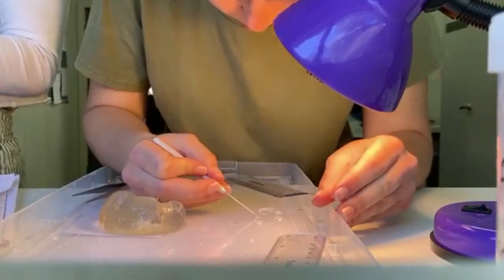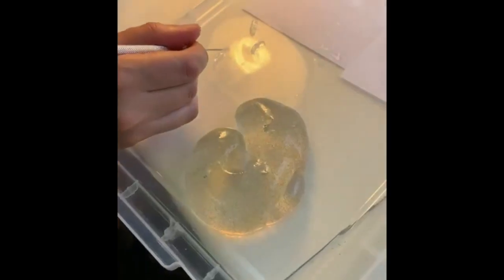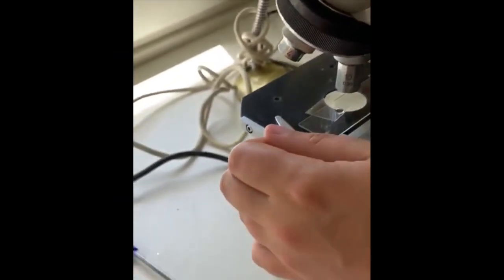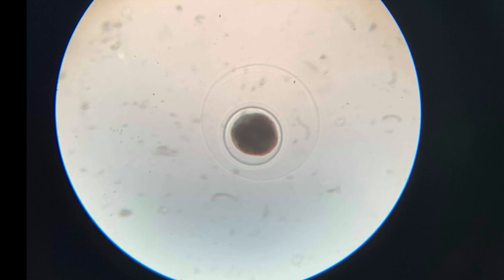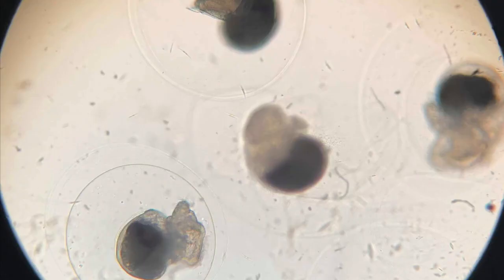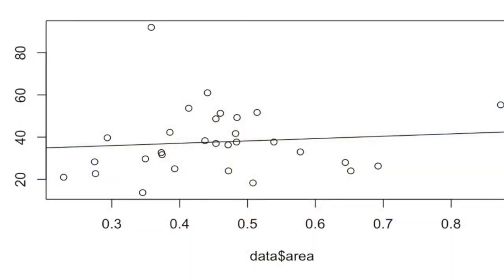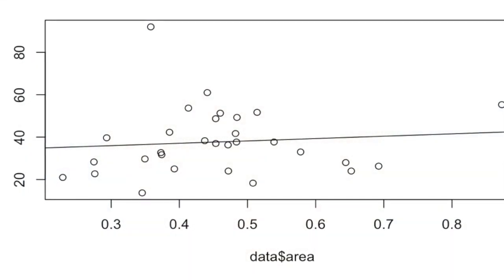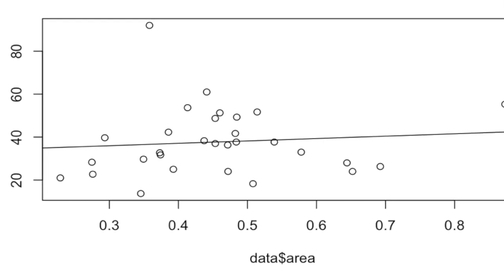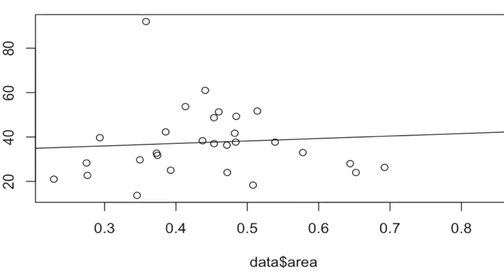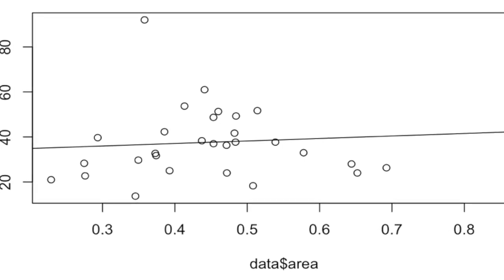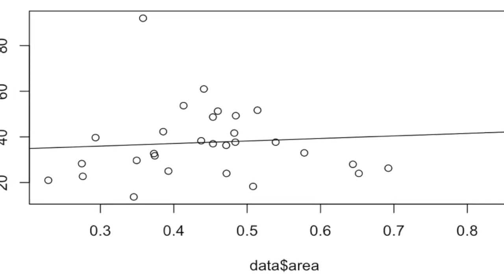Each sample was counted, averaged, and then calculated for overall density. With a compound microscope, the relative size of the eggs and developmental stages are visualised. Interestingly, these stages vary from cell division, early veligers, and moving embryos. Overall, our research communicated that the classic trade-offs between fecundity and egg size has a weak positive correlation with a p-value of 0.6, which indicates there is minimal evidence and probability of a trade-off.